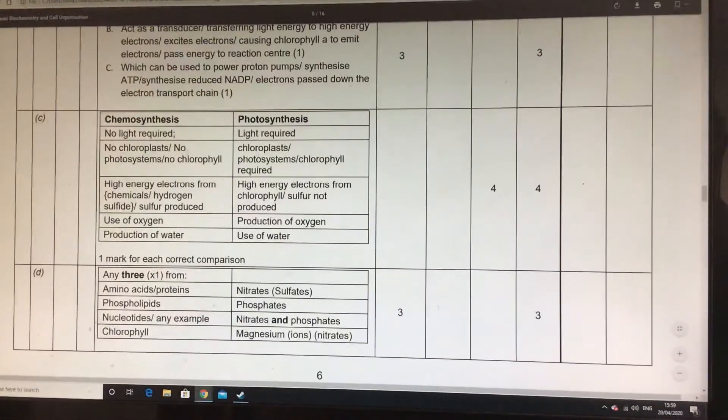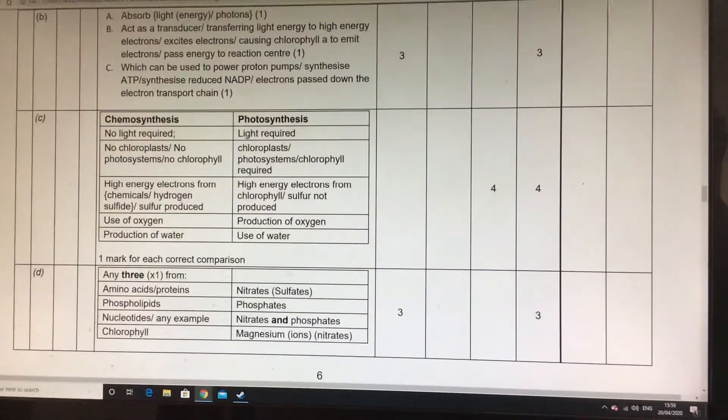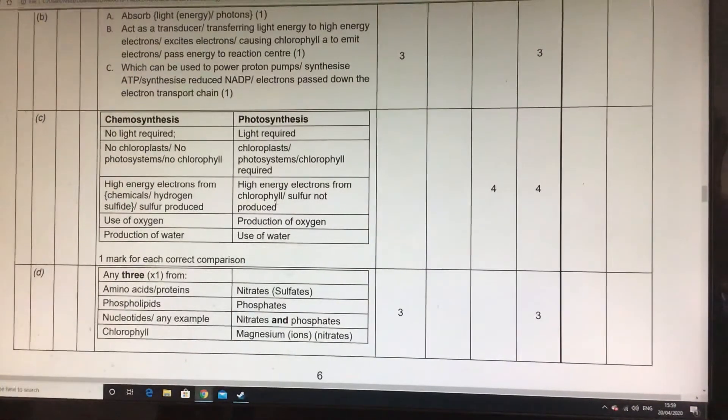Light, no light, obviously chloroplasts or no chloroplasts, that would have been a distinction that it allows you to get away with here. The electrons coming from sulphur, hydrogen sulphide and sulphur produced, that link to sulphur, and here,